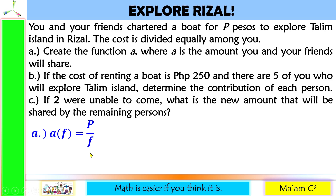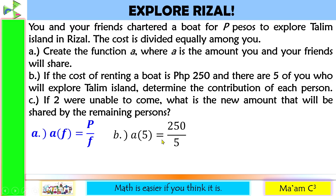Letter B: if the cost of renting a boat is P250 and there are five of you who will explore Talim Island, determine the contribution of each person. There are five persons sharing, so F becomes five. A of 5 is equal to P250 divided by 5, which equals P50. So each one of you will contribute P50.